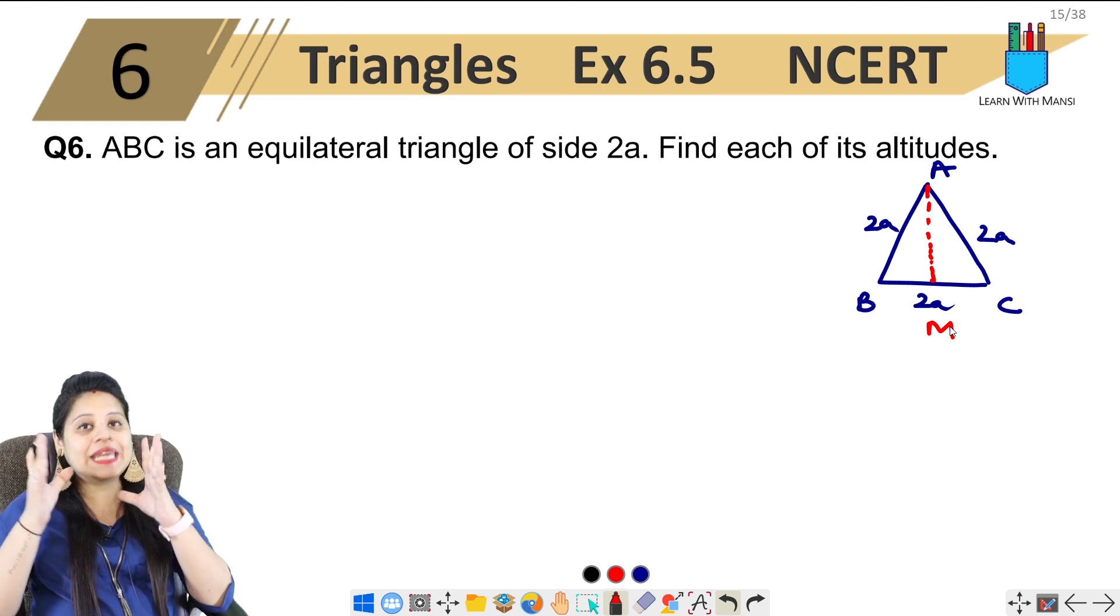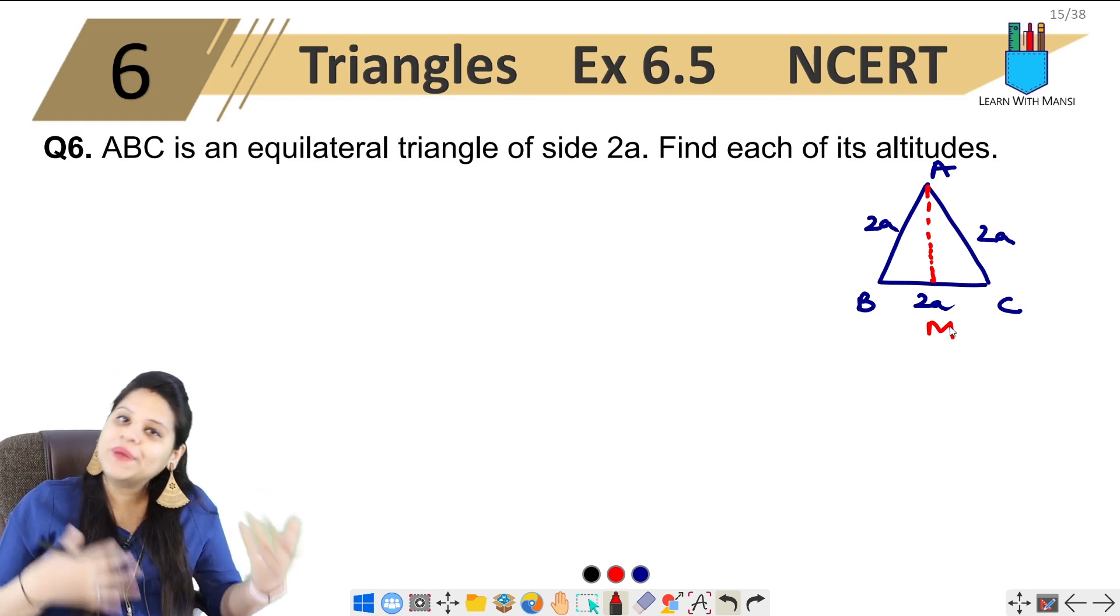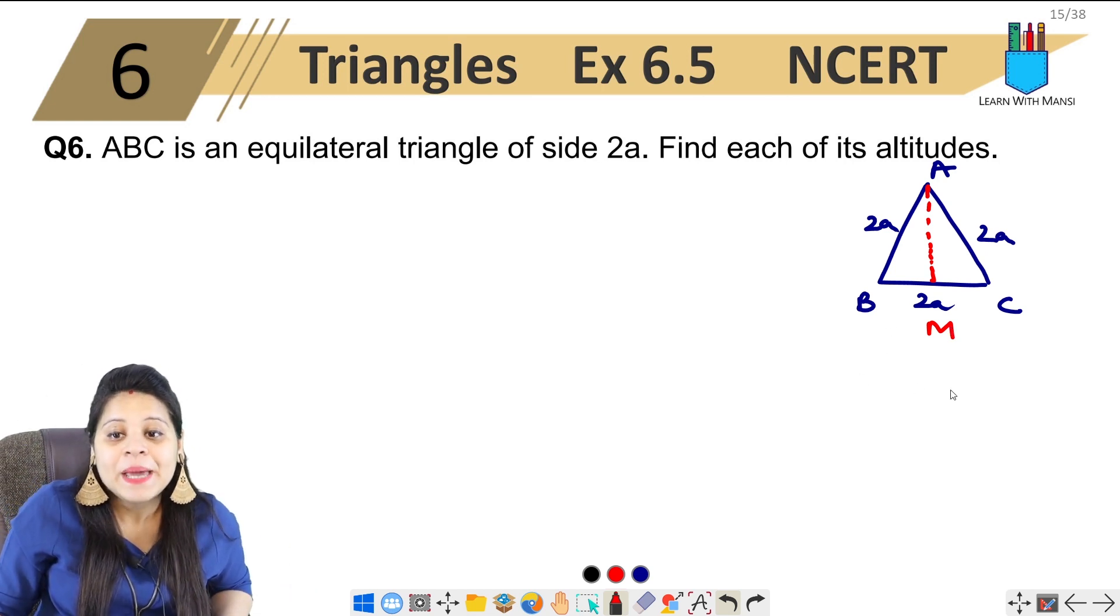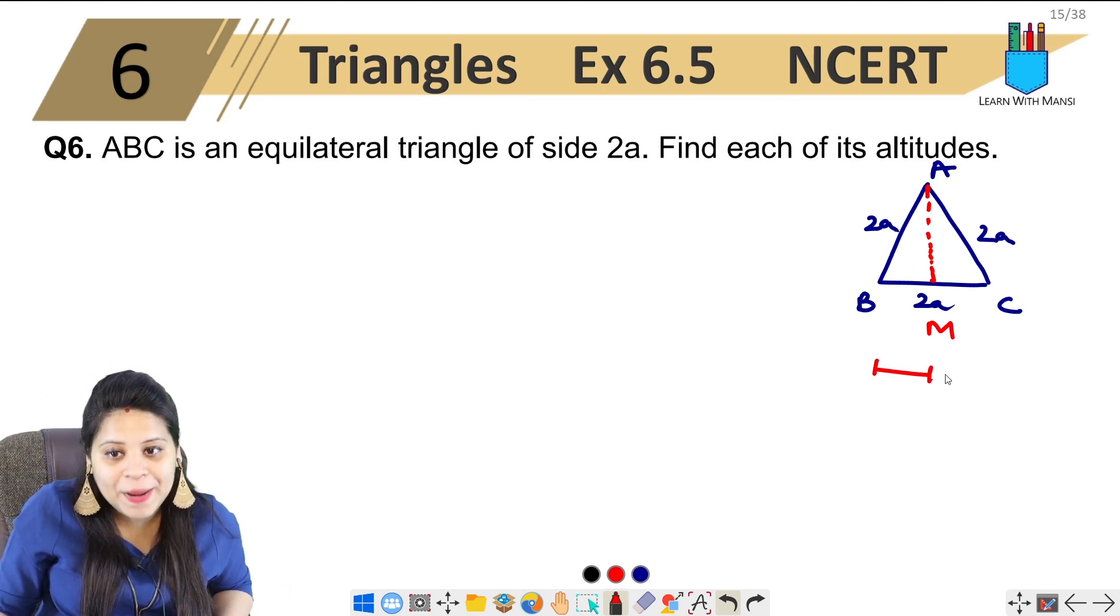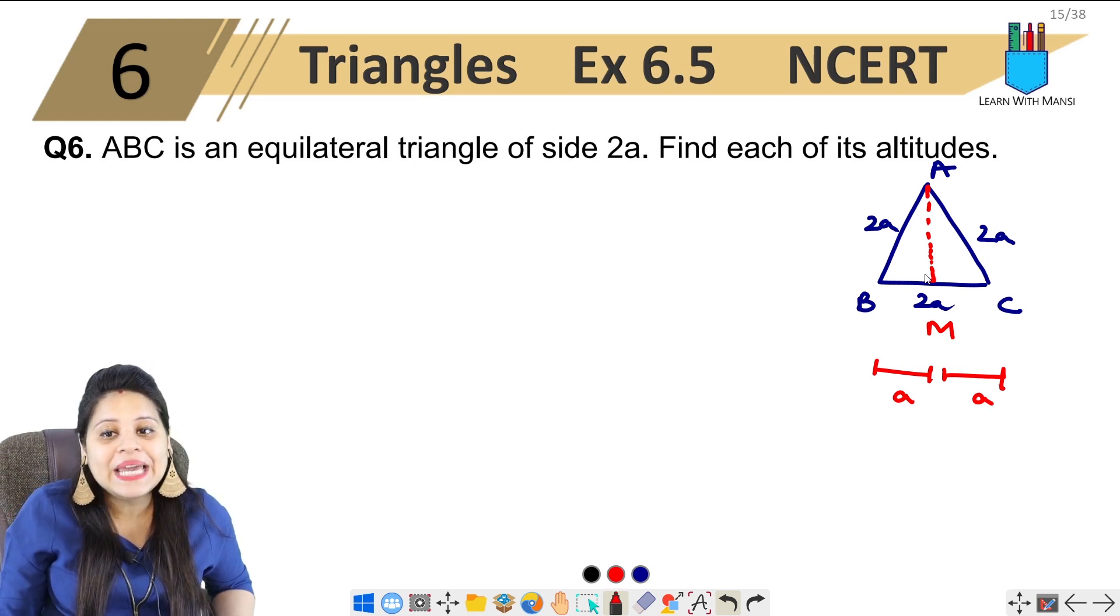Here, since it is an equilateral triangle, so this is the altitude and the median. It is the same, means this is the midpoint. If this is the way, it is the altitude, so that should come here. We find the altitude.